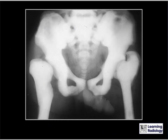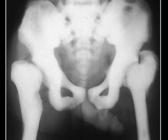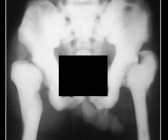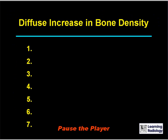This is the first case. The differential is diffuse increase in bone density. There are seven major causes.